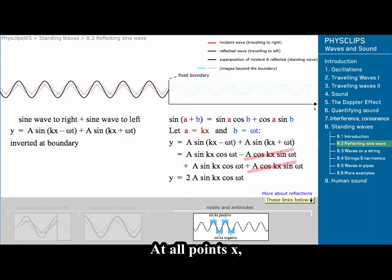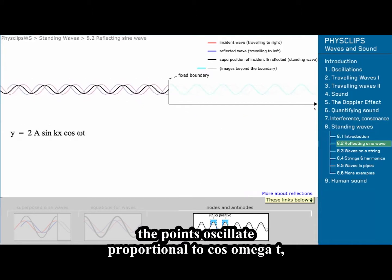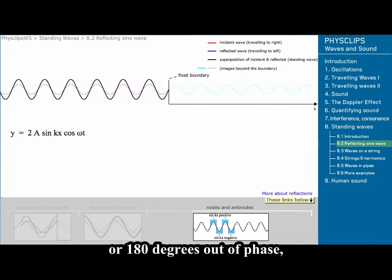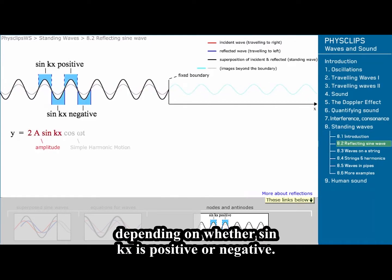At all points x, the points oscillate proportional to cos omega t, so they are all simple harmonic motion either in phase or 180 degrees out of phase, depending on whether sin kx is positive or negative.